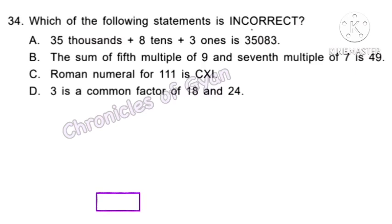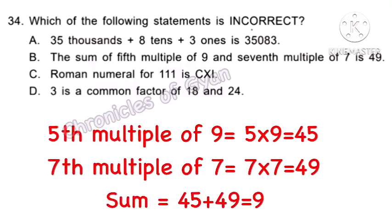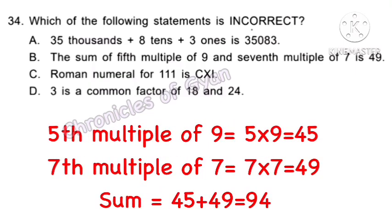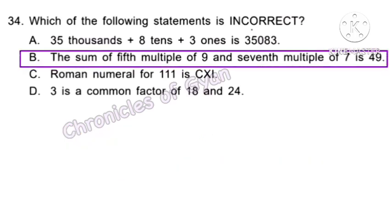Question 34 (Achiever). Which statement is incorrect? Option B states that the sum of the 5th multiple of 9 and the 7th multiple of 7 is 49. The 5th multiple of 9 is 45 and the 7th multiple of 7 is 49. Their sum is 94, not 49. Hence option B is incorrect.